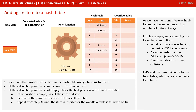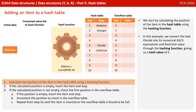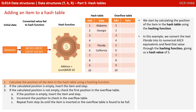So let's add the item Delaware to this hash table, which already contains four items. We start by calculating the position of the item in the hash table using the hashing function. In this example, we convert the text Florida into its numerical ASCII equivalents and feed that value through the hashing function, giving us the hash value of 5.